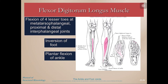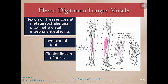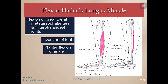The flexor digitorum longus does exactly what its name says — it flexes the digits. It also does inversion of the foot because it crosses the medial aspect, and plantar flexion of the ankle because it's on the posterior aspect. Finally, the flexor hallucis longus is on the posterior medial aspect, so it flexes the great toe, inverts the foot, and causes plantar flexion of the ankle.